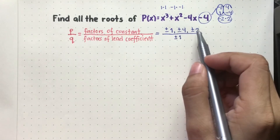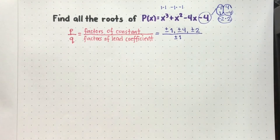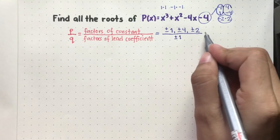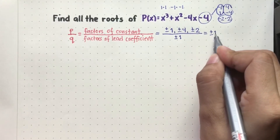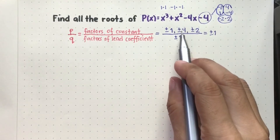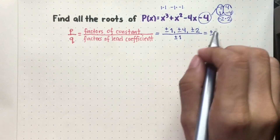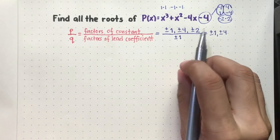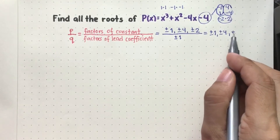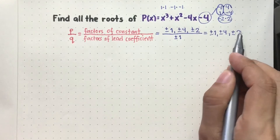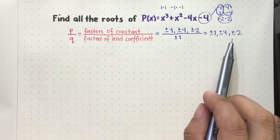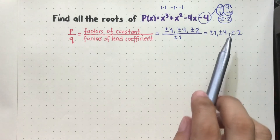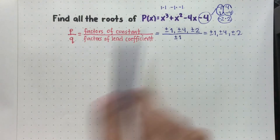So dito naman gagaling yung ating mga possible rational roots — i-simplify muna natin. So i-divide lang natin yung bawat factor sa denominator na positive and negative 1. Positive and negative 1 divided by positive and negative 1, that will be positive and negative 1. Positive and negative 4 divided by 1, positive and negative 4 yung kakalabasan. And positive and negative 2 divided by 1, positive and negative 2 pa rin. Now, eto na yung mga possible roots ng polynomial na ito.